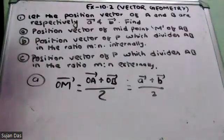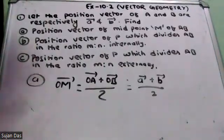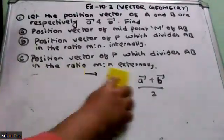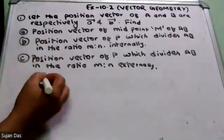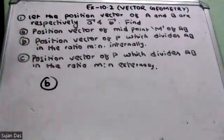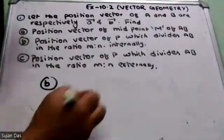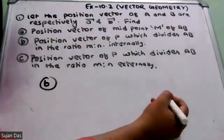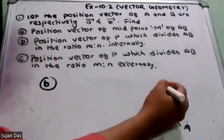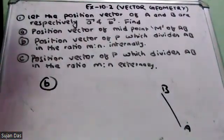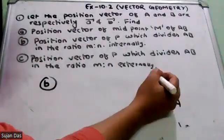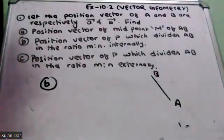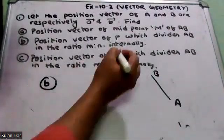This is the position vector. Now, let's say this is A and B. P divides AB internally. So P divides AB internally.